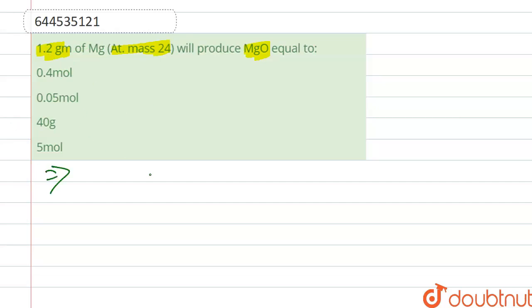we write the reaction for MgO. When Mg reacts with half of O2, it forms MgO. So we see that one mole of Mg forms one mole of MgO. Alright, so we can say that the number of